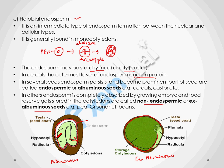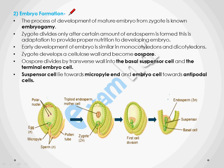Now we are going to discuss embryo formation. The embryo forms when fusion between the egg and the male gamete takes place — forming a zygote — which after further division converts into a mature embryo. This process is called embryogamy. The zygote will only divide when some endosperm has formed, so that it can get nourishment from the endosperm. This is a kind of adaptation which provides nutrition to the developing embryo. The zygote is in a 2N condition, having equal numbers of chromosomes from both male and female.